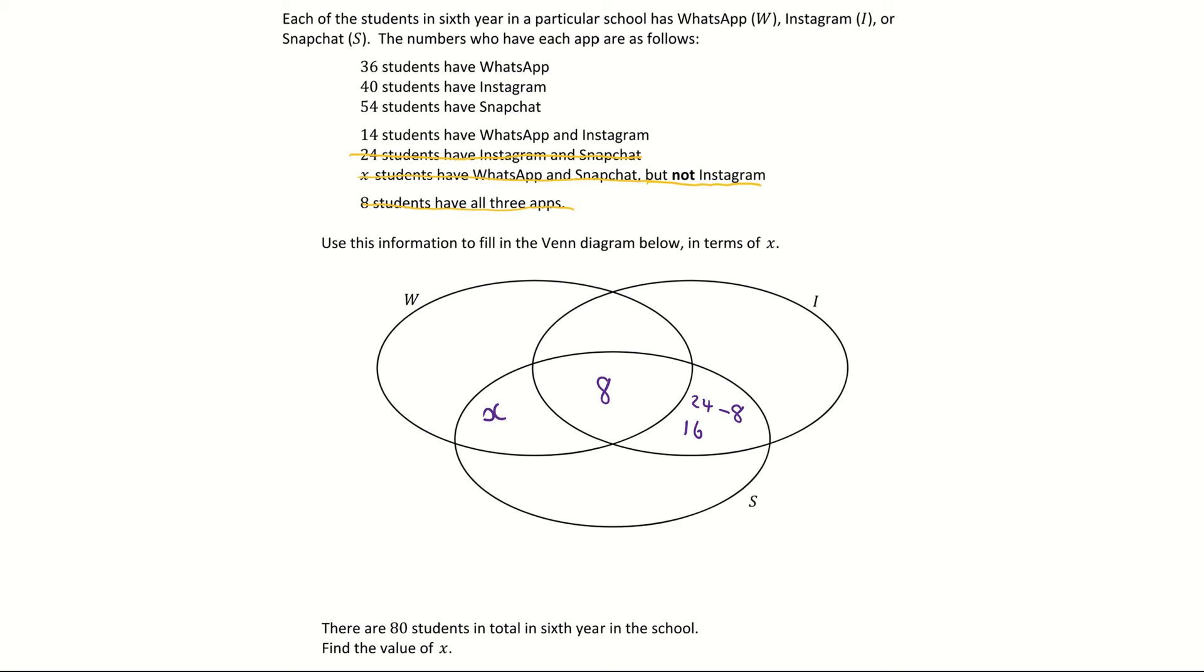So the 16 plus the 8 brings me up to the 24, so 16 students have Instagram and Snapchat only. Crossing that off my list, I'm now moving up to the 14 students. Fourteen students have WhatsApp and Instagram. So that would be this region here. Once again 8 of them are already included, so when I'm filling in my 14 here I need to subtract the 8 which brings me down to 6 students who have WhatsApp and Instagram only.